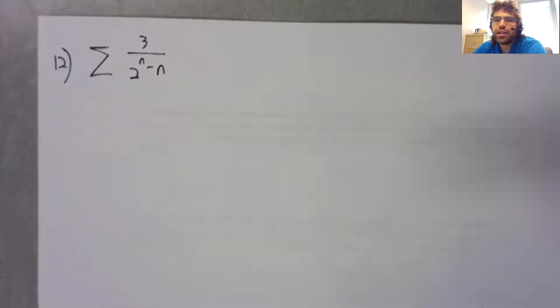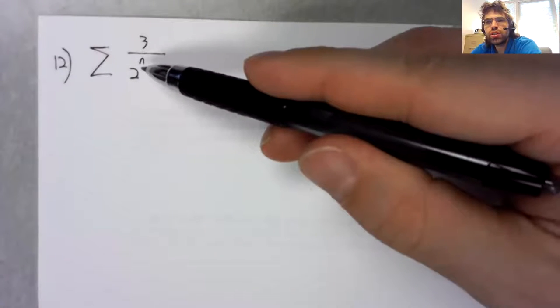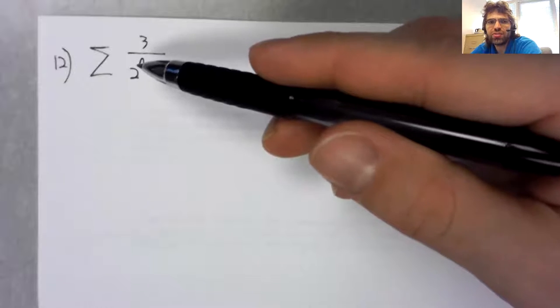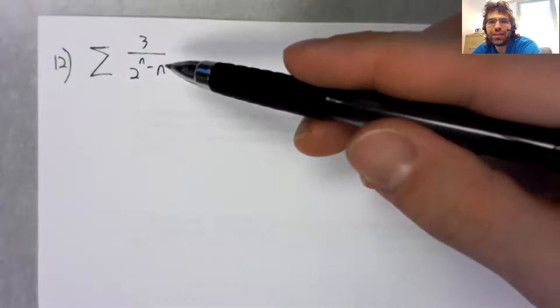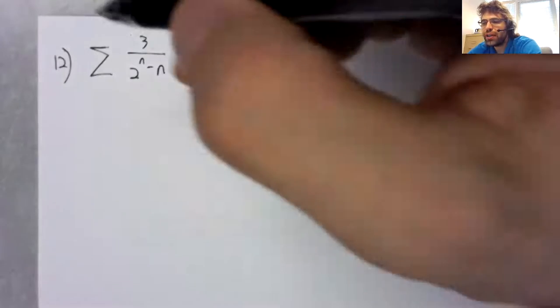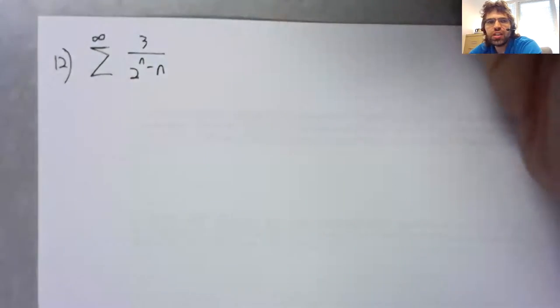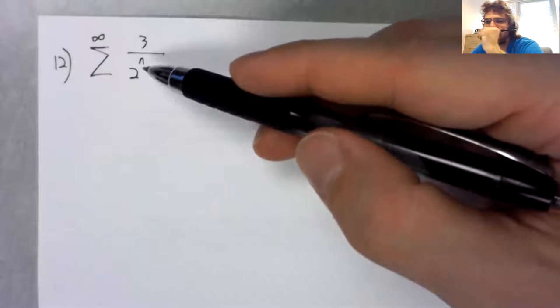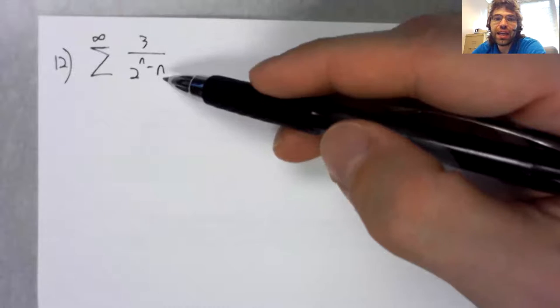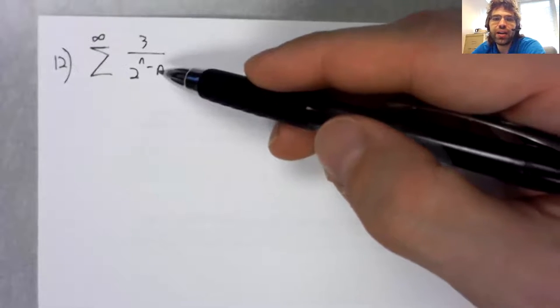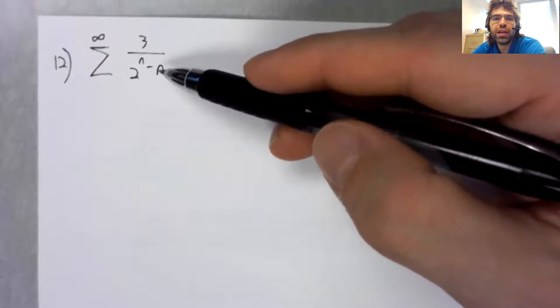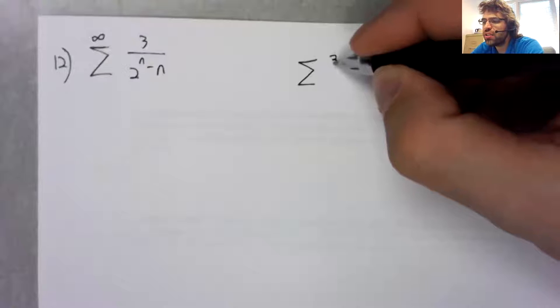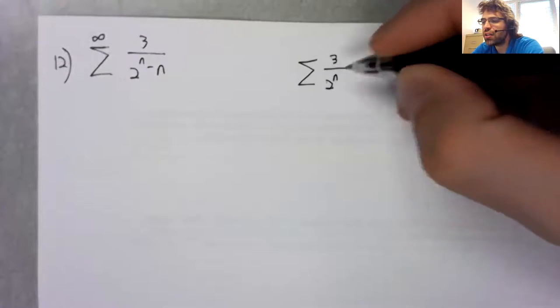But when n gets big, two to the power of n is absolutely enormous compared to n. So when n is big, as n approaches infinity, this two to the power of n is really the only thing that matters. This n might as well not be there. It's so much smaller compared to everything else.